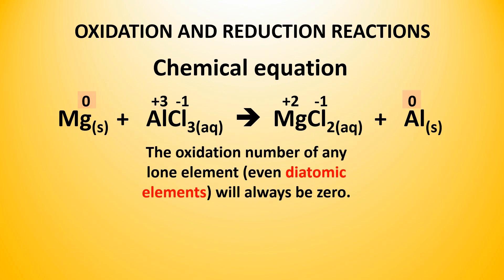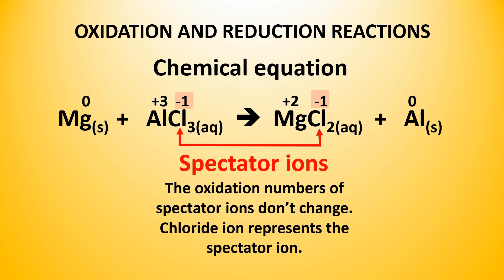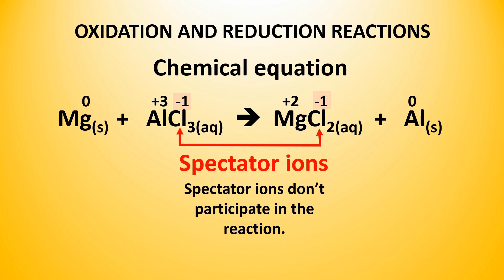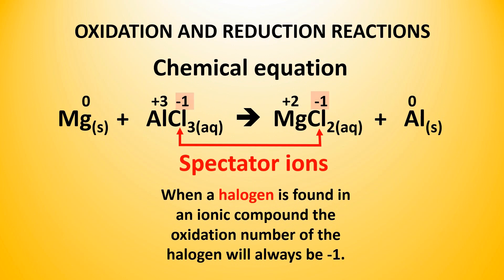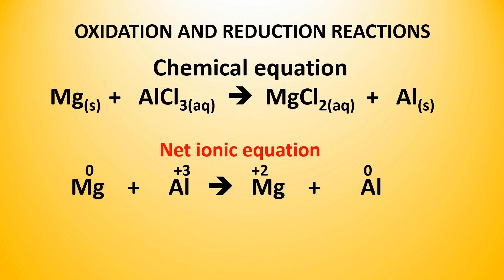The oxidation number of any lone element, even diatomic elements, will always be 0. The oxidation numbers for spectator ions don't change. In this reaction, chloride ion represents the spectator ion. Spectator ions don't participate in the reaction — they are simply there to cancel the positive charges. Remember, when a halogen like chlorine is found in an ionic compound, the oxidation number of the halogen will always be minus 1. So we may now write the net ionic equation, which does not contain spectator ions.